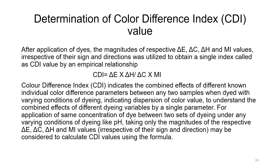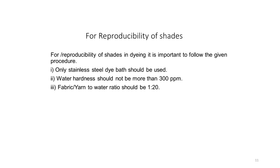For application of the same concentration of dye between two sets of dyeing under varying conditions, only the magnitude of delta E, delta C, delta H, and MI values, irrespective of sign and direction, may be considered to calculate the CDI value. It is a very well-defined science with no ambiguity about how we can find color differences from one fabric swatch to another. The control sample readings are taken first and then the dyed or treated sample readings are taken for comparison.